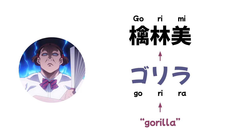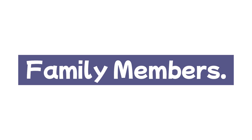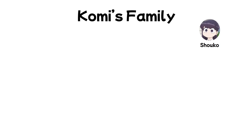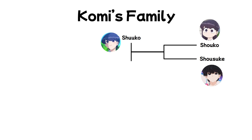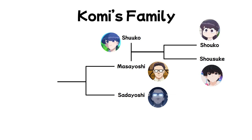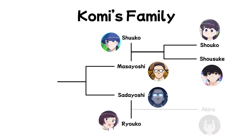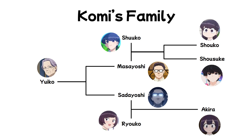Now for family members, starting with Komi's family. We have Komi Shouko, our protagonist. Her brother's name is Shousuke, her mother is Shuko, her father is Masayoshi, Masayoshi's brother — Komi-san's uncle — is Sarayoshi, his wife — Komi-san's aunt — is Ryoko, their daughter — Komi-san's cousin — is Akira, and Komi-san's grandmother, Masayoshi and Sarayoshi's mother, is named Yuiko.